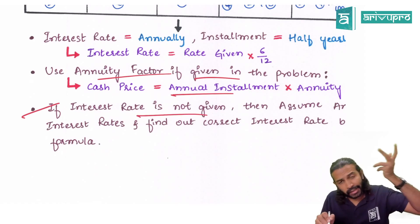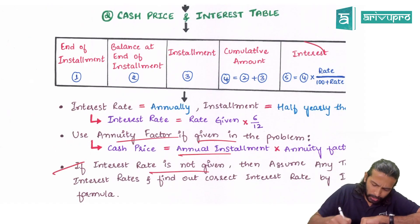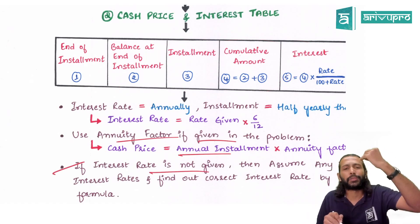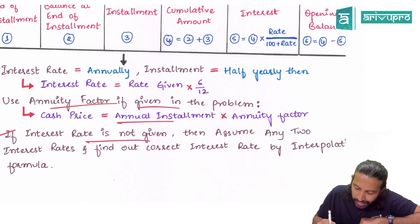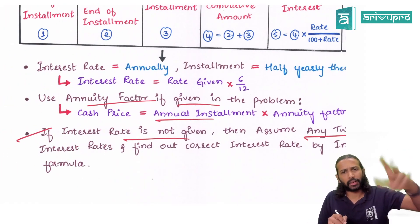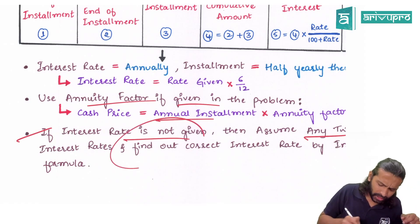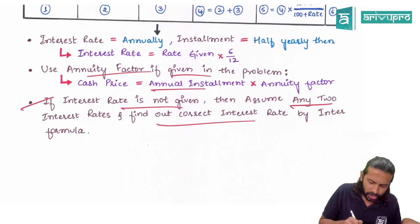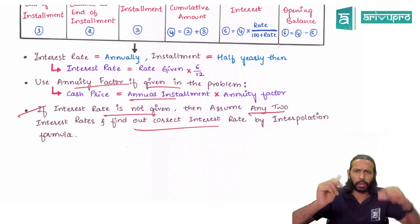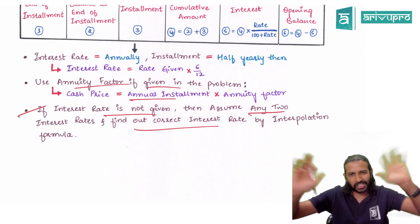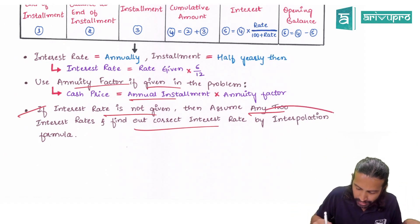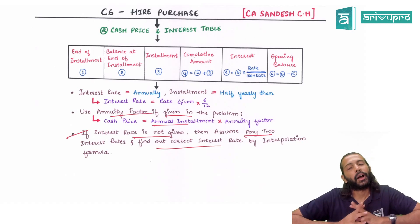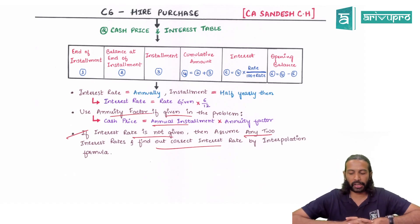Last, if the interest rate itself is not given in the problem, you cannot adopt the table method — interest rate is a must for that. So you assume any two interest rates — in our problem we assumed 6 and 12 — and find the correct interest rate using the interpolation formula. What we solved logically in class is called the interpolation formula. These are all the things we learned under the higher purchase system, and with this the summary chart revision is also over. Thank you.